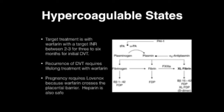Target treatment is warfarin with a target INR between two and three for three to six months for initial DVT. Recurrence of DVT requires lifelong treatment with warfarin. Pregnancy requires lovenox because warfarin crosses the placental barrier; heparin is also safe.